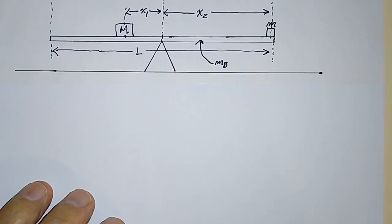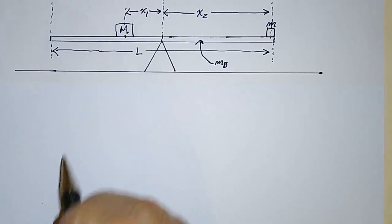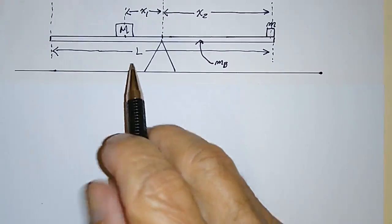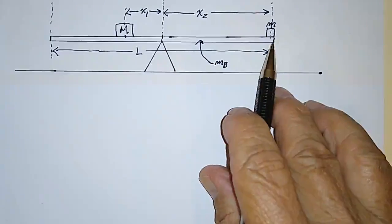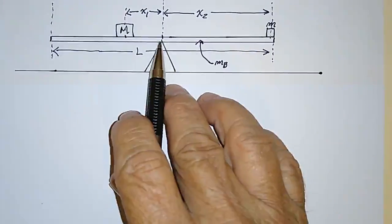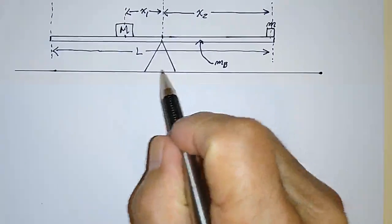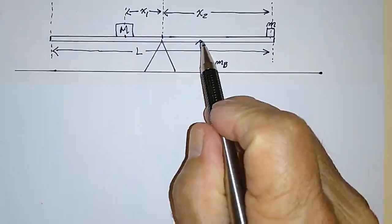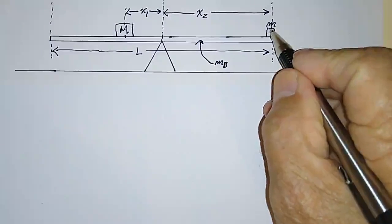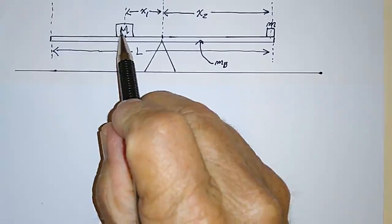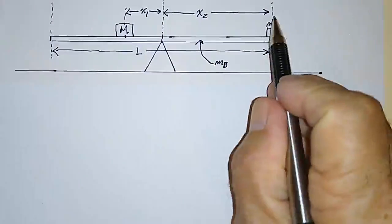This is to show you how to handle seesaw problems, or torque balance problems. I've already drawn a picture here — this represents a seesaw. This bar of length L is uniform, meaning the mass is distributed uniformly, so its center of mass is in the middle. It could be balanced on this pivot here. I'm denoting the mass of the bar as m_b, and I've placed a little mass m on one end and a bigger mass M at some distance x1 from the center.